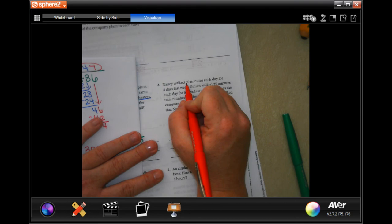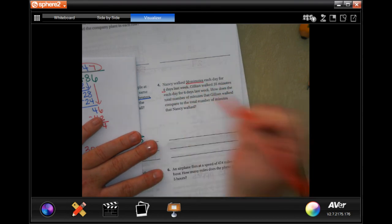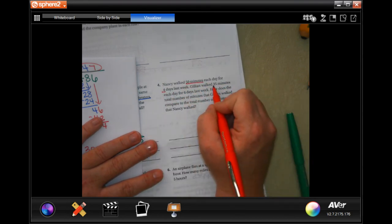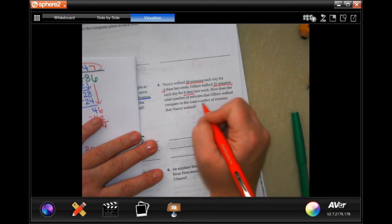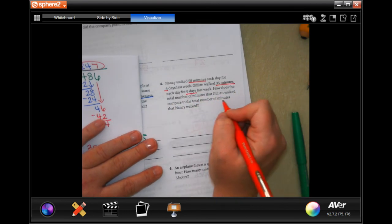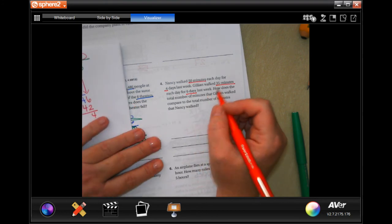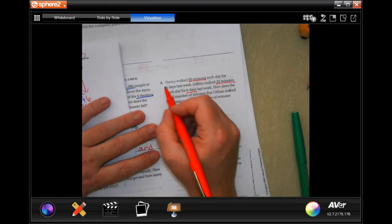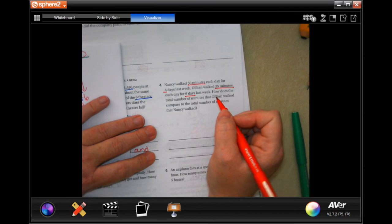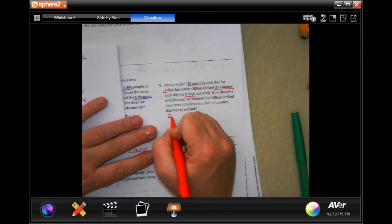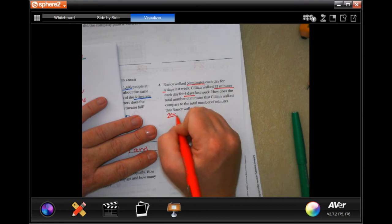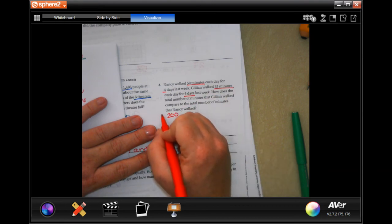Nancy walked 50 minutes each day for 4 days. Jillian walked 35 minutes each day for 6 days. Compare the total number of minutes that Jillian walked to the total number of minutes Nancy walked. Well, first, we need to find out how many it is. So, 4 times 5 is 20, and then I'm going to add that 0 on. So, that one's Nancy.